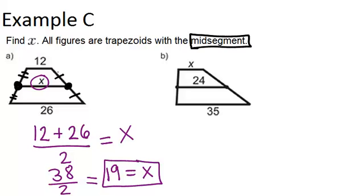And if you think about it, that should make sense, because 19 is the number exactly in the middle of 12 and 26, and it should look like the mid-segment is in the middle of the lengths of 12 and 26.